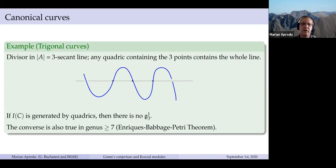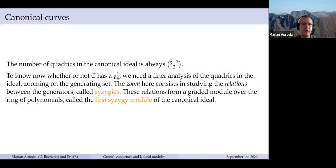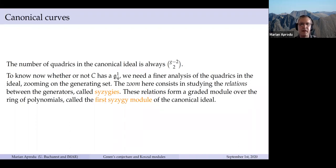In conclusion, if the ideal is generated by quadrics then the curve carries no g^1_3, and the converse is also true in genus at least seven — that's the Enriques-Babbage-Petri theorem, a very deep result in algebraic geometry. The number of quadrics in the canonical ideal is always binomial(g-2, 2). If we want to know whether C has a g^1_4, just deciding whether the ideal is generated by quadrics does not suffice anymore. The existence of a g^1_4 will be revealed by a finer analysis of these quadrics — more precisely the relations among them. These relations form a graded module called the first syzygy module of the canonical ideal.